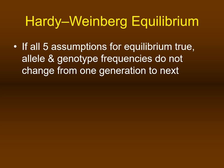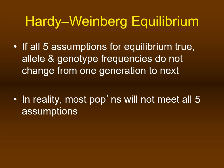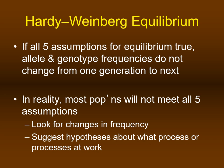Hardy-Weinberg equilibrium tells us that if all five assumptions are met — no mutation, no gene flow, random mating, large population, and no selection — then the frequencies of alleles and genotypes do not change from one generation to another. Of course, populations usually do not meet all five assumptions. Therefore, we can look for changes in frequency of specific phenotypes or genotypes and propose hypotheses about which processes drive these changes.